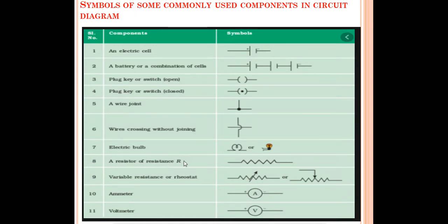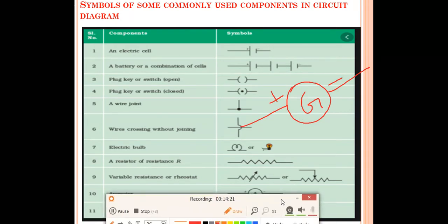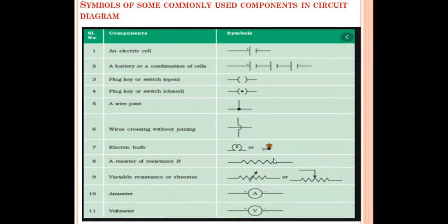Electric bulb has its own symbol. Resistor or resistance is shown as zigzag lines. Variable resistance or rheostat is drawn as a resistor with an arrow. Ammeter is a circle with A inside (plus and minus). Galvanometer is a circle with G inside — it is also used to measure current, specifically very sensitive or low current.